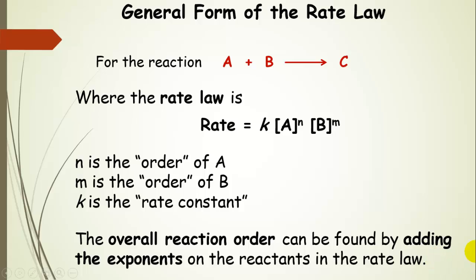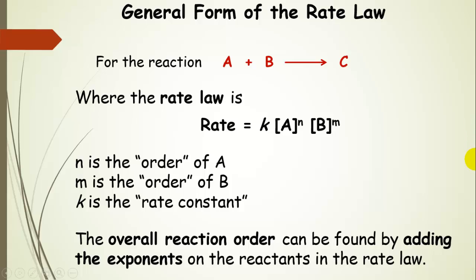Let's talk a little more about the general form of the differential rate law. N is the order of A, M is the order of B, and small k is the rate constant. We can find the overall reaction order — the order of the whole reaction — by adding the exponents on the reactants in the rate law. So N plus M gives us the overall order of the reaction.